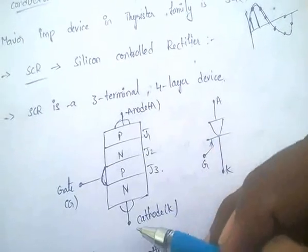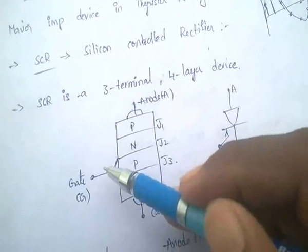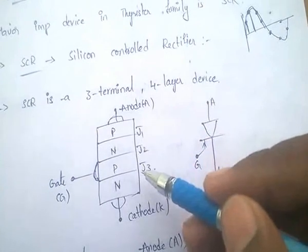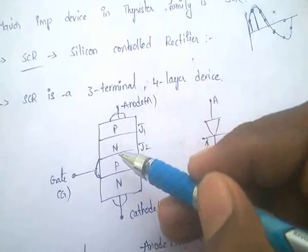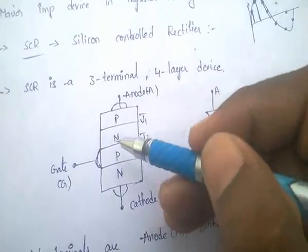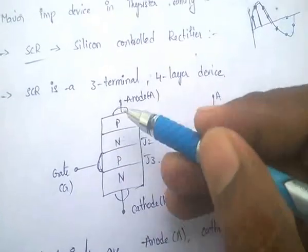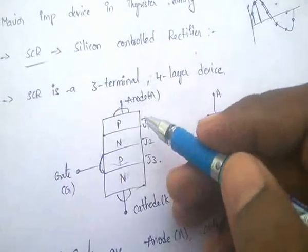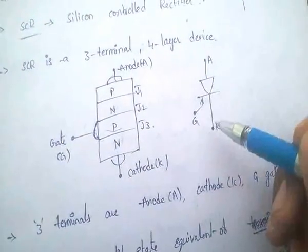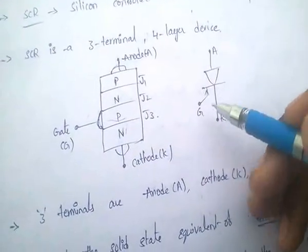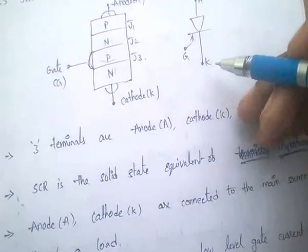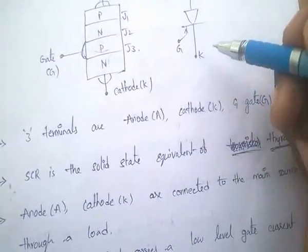The three terminals are: anode, cathode, and gate. It has three junctions J1, J2, J3 and a PNPN four-layer structure. SCR is a three-terminal, three-junction, four-layer device. It is the anode, cathode, and gate.